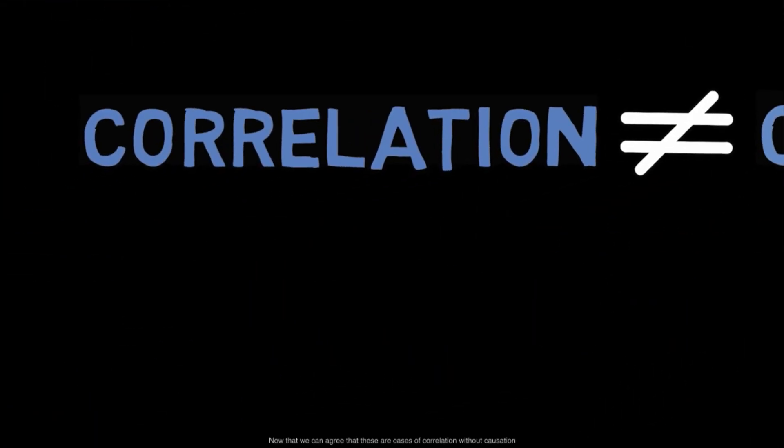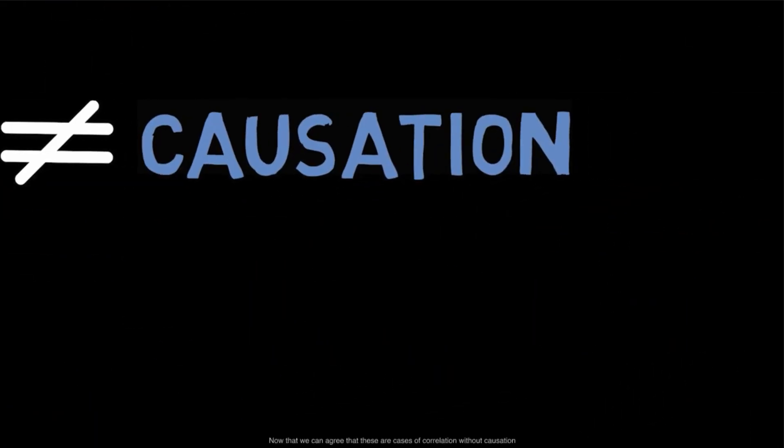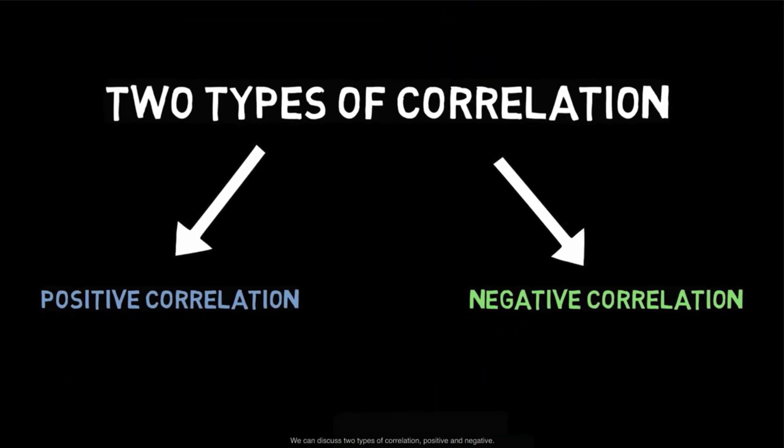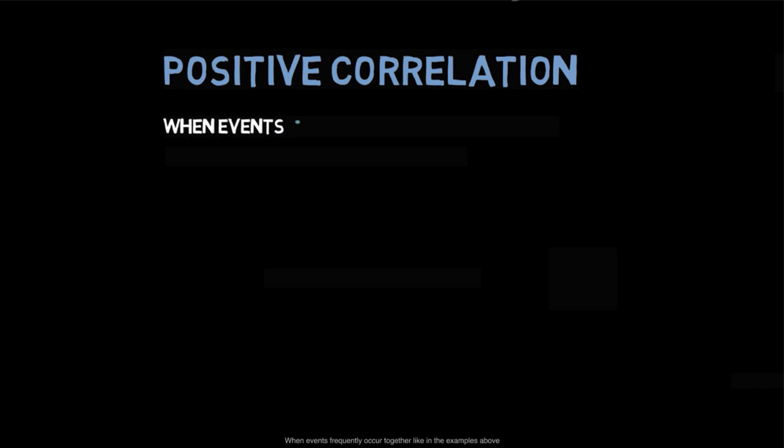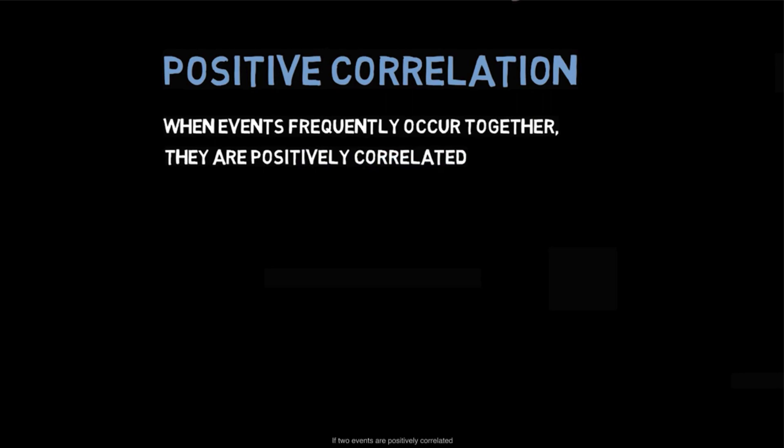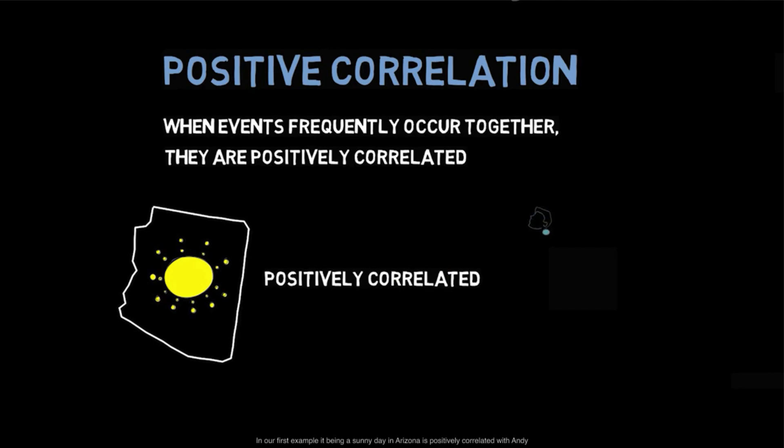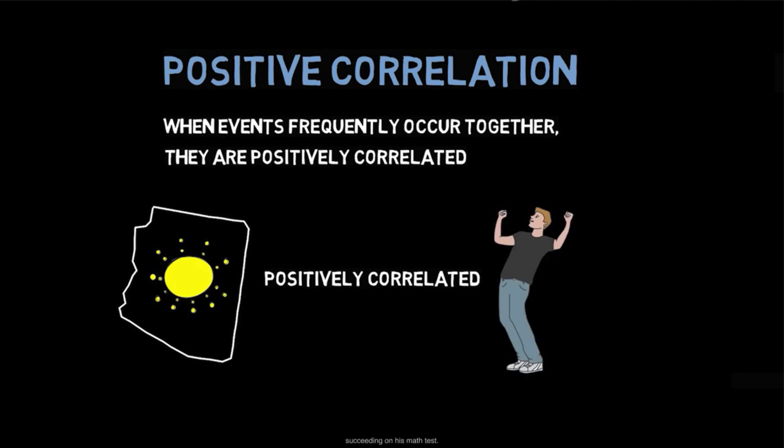Now that we can agree that these are cases of correlation without causation, we can discuss two types of correlation, positive and negative. When events frequently occur together, like in the examples above, they are positively correlated. If two events are positively correlated, then when one event is present, the other is often present as well. In our first example, it being a sunny day in Arizona is positively correlated with Andy succeeding on his math test.